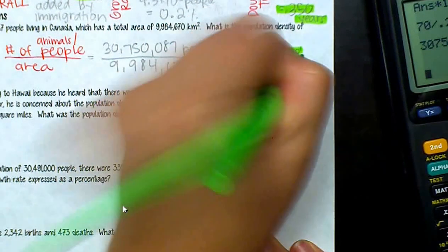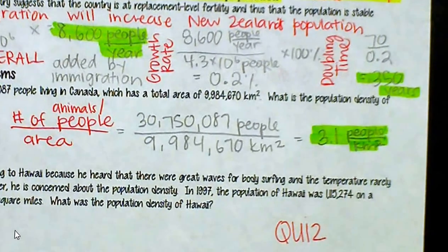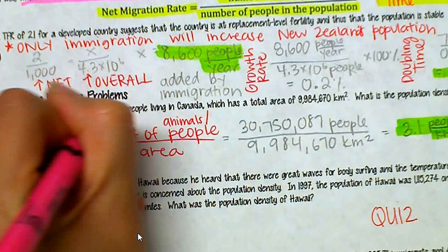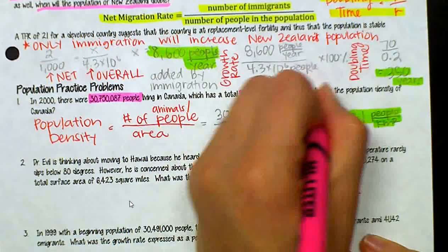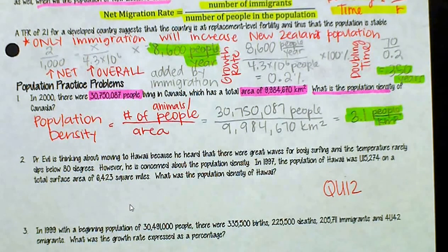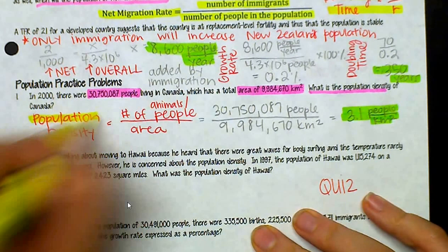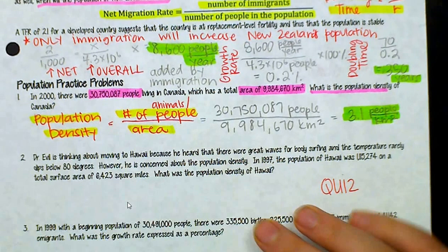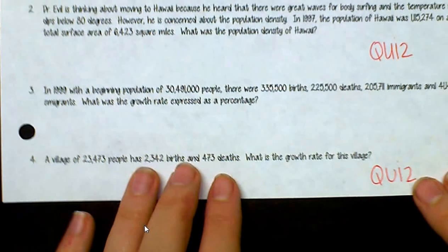The population density equation — number of people over area — can apply to humans, antelopes, plants, or anything. Highlight the equation if it helps you. Number two, about Dr. Evil, is a quiz question you'll do on your own. Next we have a growth rate question.